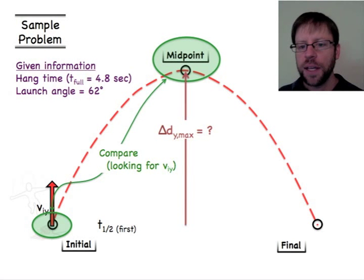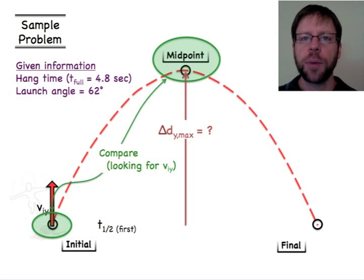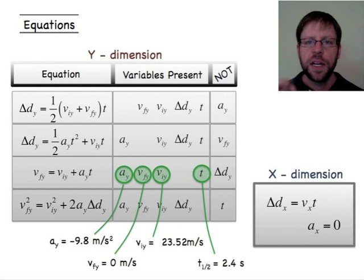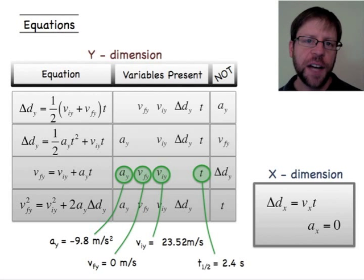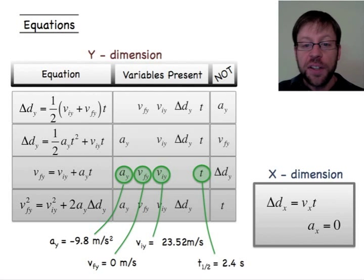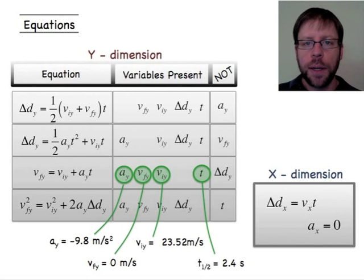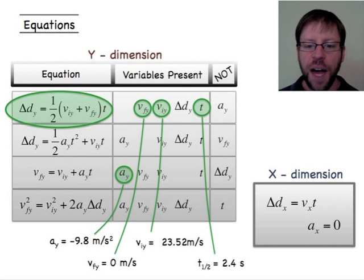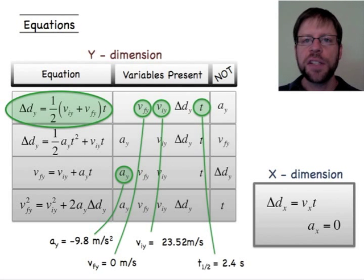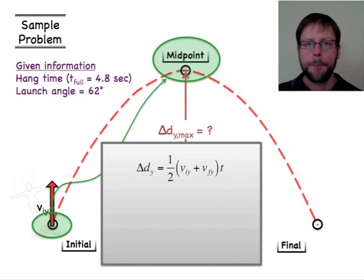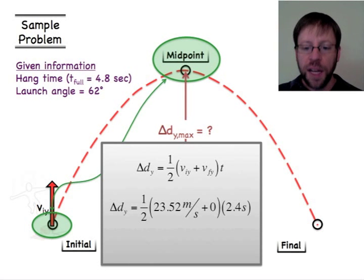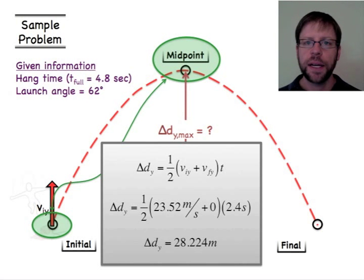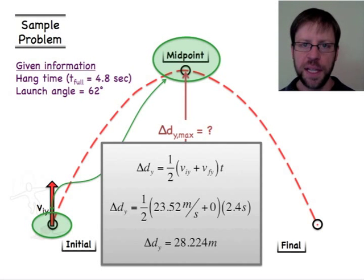While still comparing the initial and midpoint locations, let's find the maximum height. I now know enough variables to pick a kinematic equation that includes delta-dy. Using those same known values — a = −9.8 m/s², viy = 23.52 m/s, vf = 0, t = 2.4 s — I plug into the equation and find the maximum height is 28.224 meters.